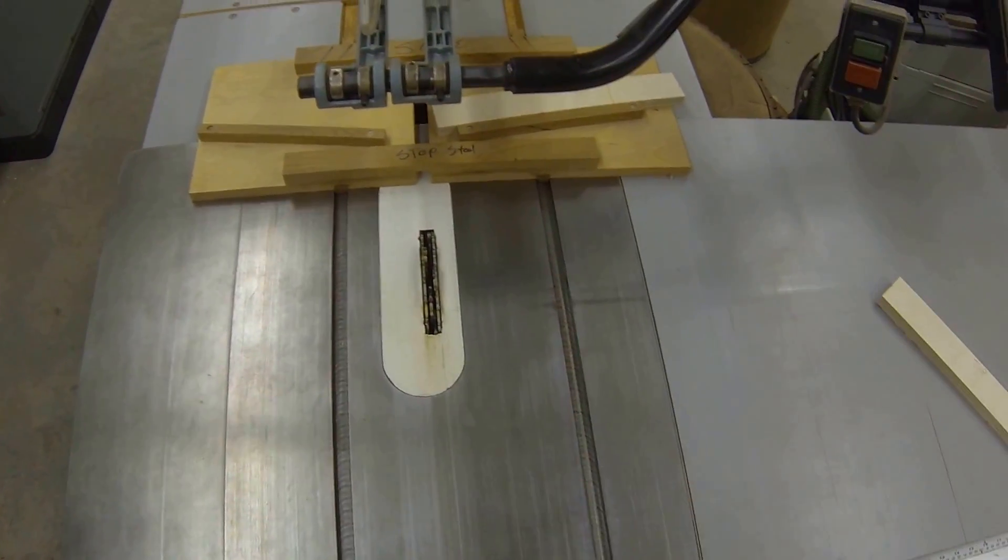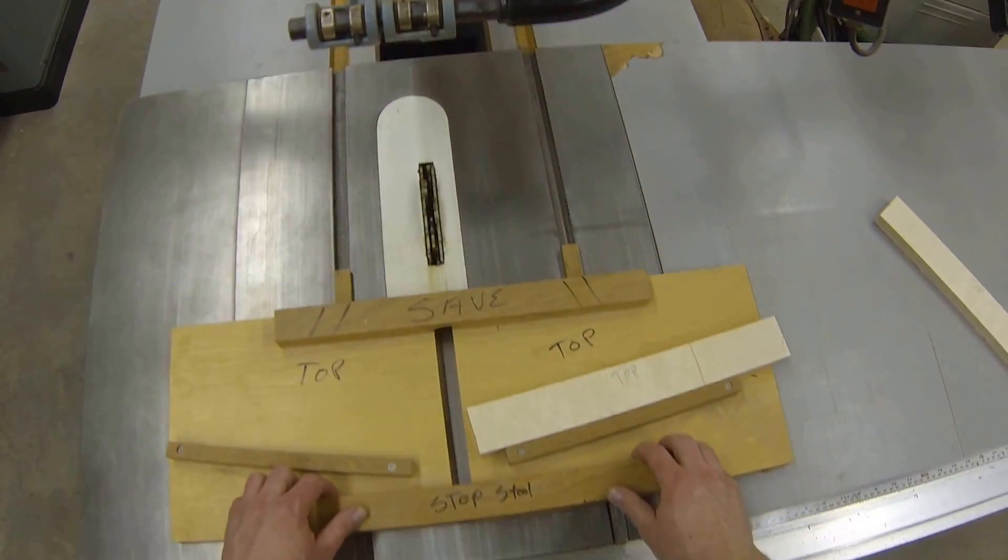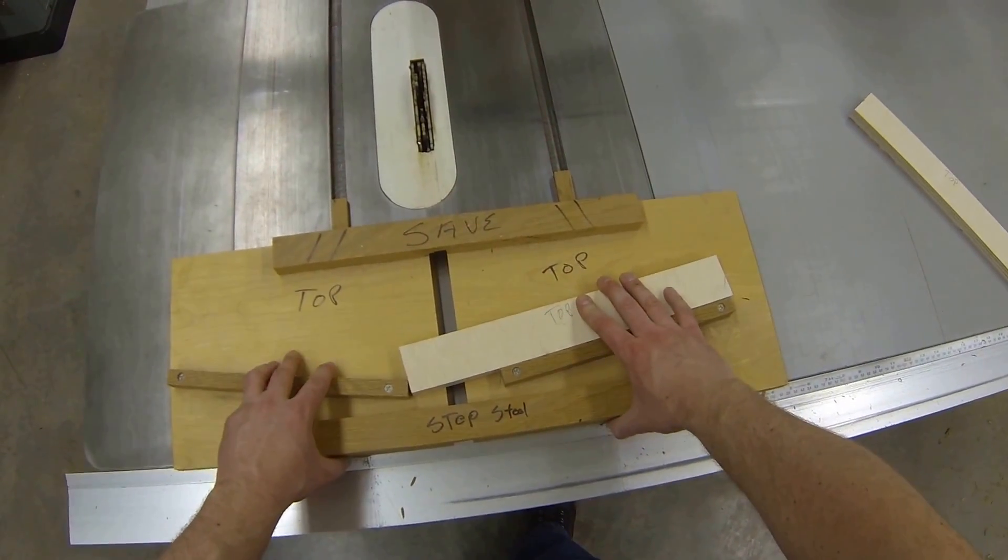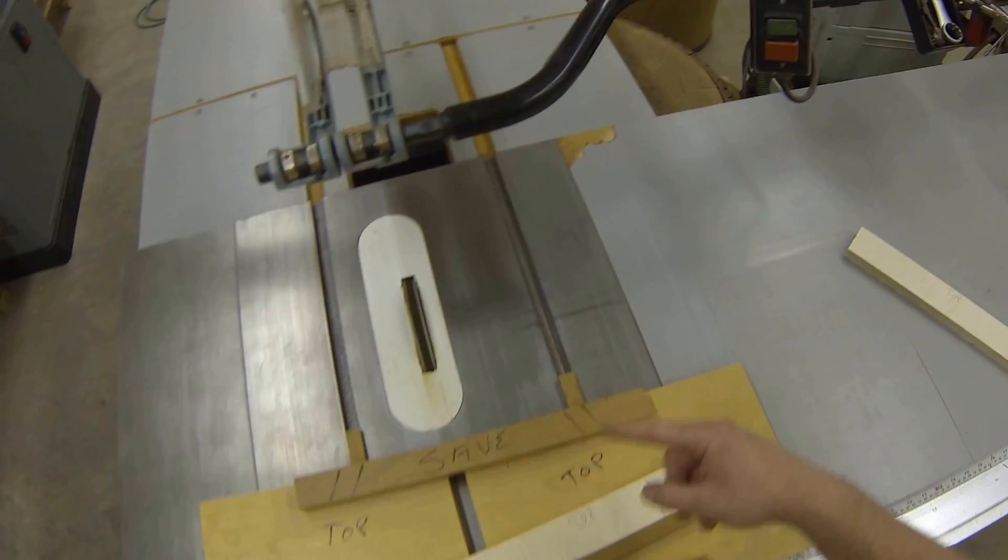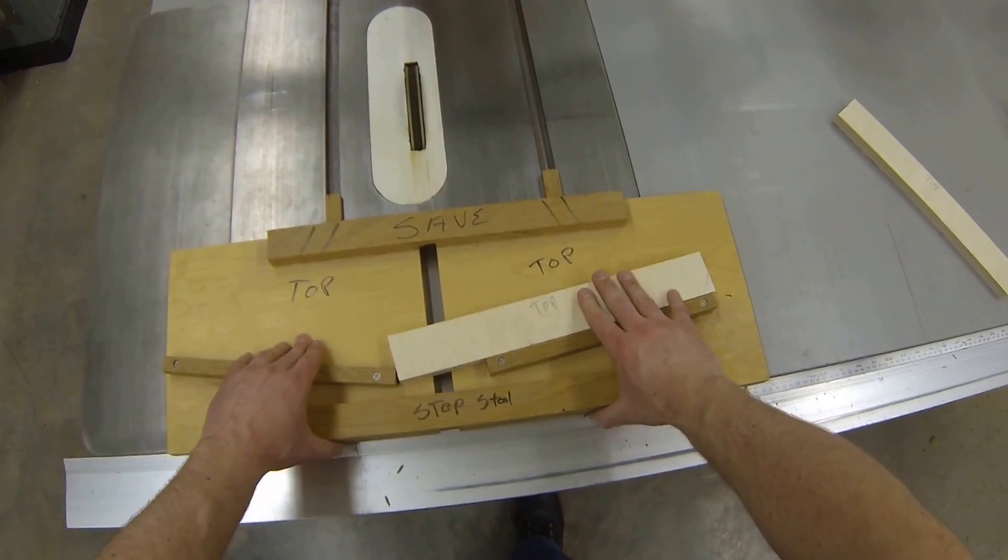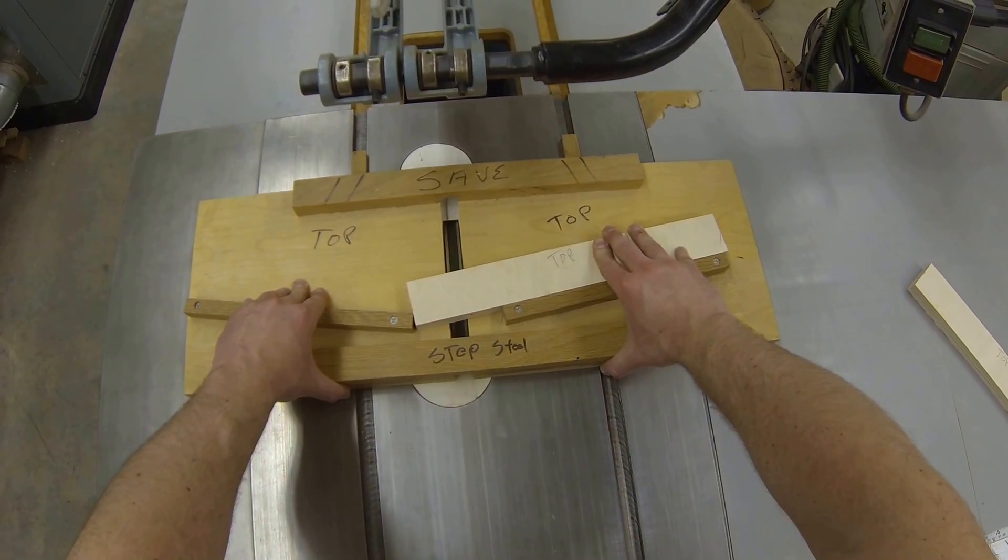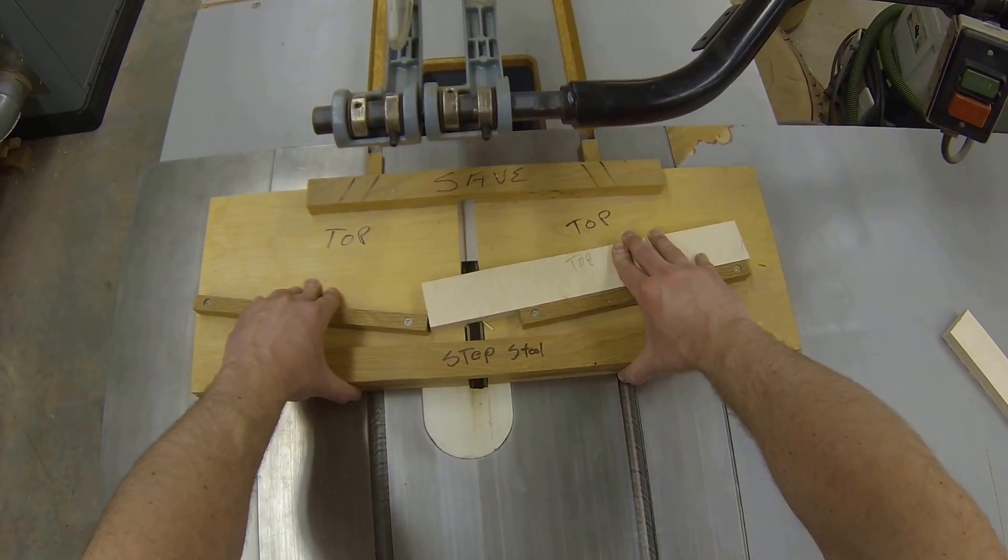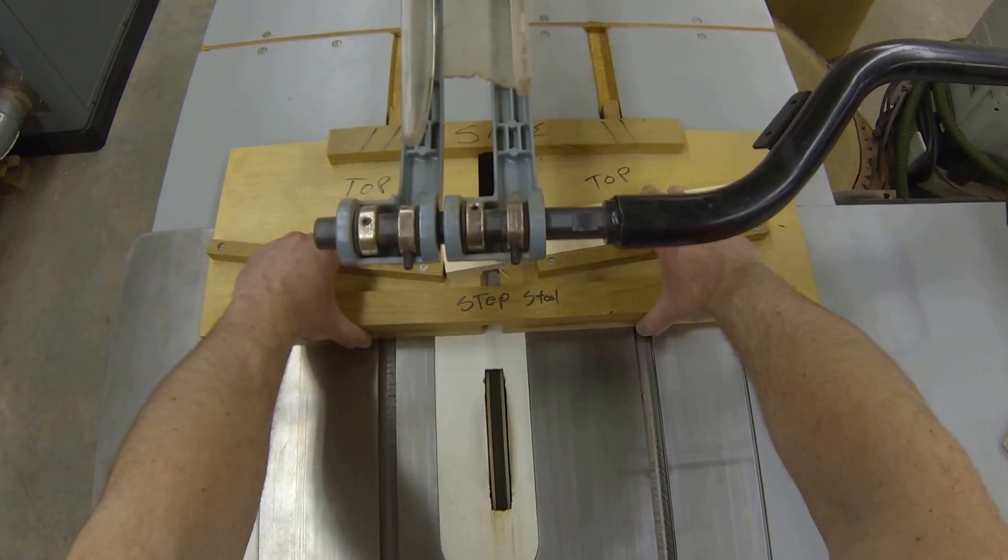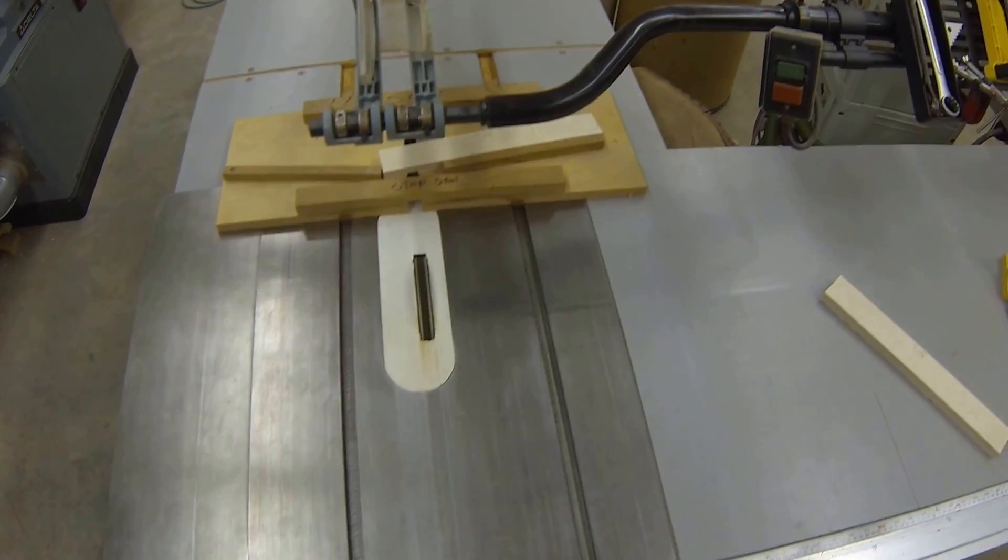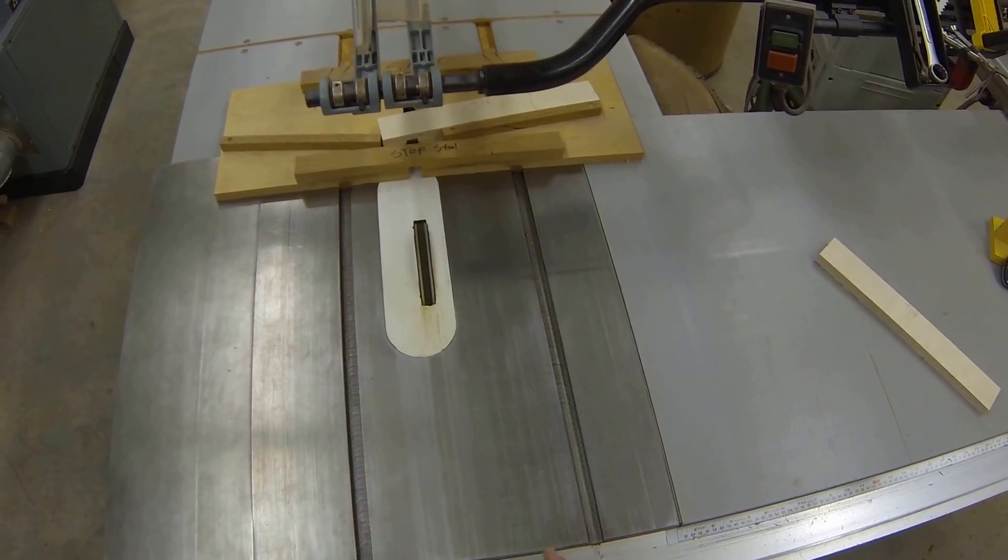So here's how we do it for real. I'm going to reach up, start my machine, let the blade come up to full speed, all the way through, hands out and around, shut our saw off.